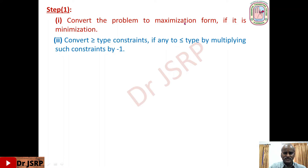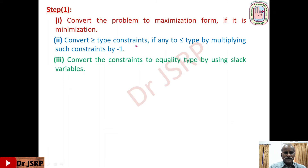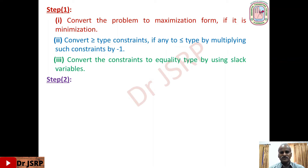So two key points: the objective function should be maximization, and all constraints should be less-than-or-equal-to type. After converting all inequalities to less-than-or-equal-to type, we convert them to equality type by adding slack variables. Since all constraints are less-than-or-equal-to type and we use slack variables, the coefficient matrix clearly contains a unit matrix.